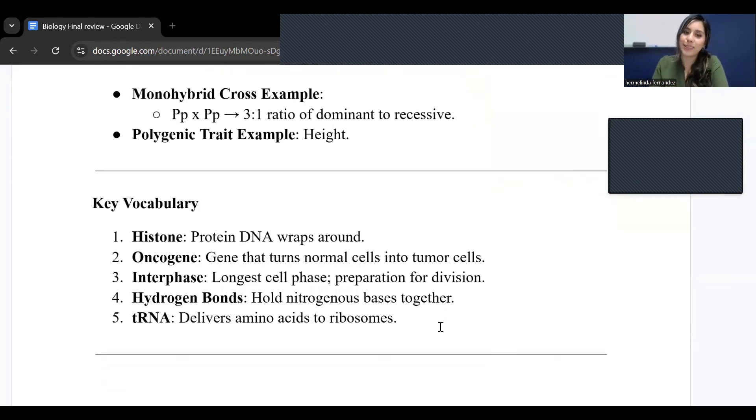Here are some key vocabulary to remember. Our histone wraps around - there's that protein DNA that wraps around. Oncogene is a gene that turns normal cells into tumor cells. Think of oncology - that is all going to be tumor-related. Interphase is our first phase in mitosis. This is the longest phase and it prepares for division. Hydrogen bonds hold nitrogenous bases together. Think of holding - hydrogen bonds hold everything together. And then tRNA is our traveling agent. tRNA delivers those amino acids to those ribosomes. That is all for this. If you have any questions, please don't hesitate to reach out. Thank you.